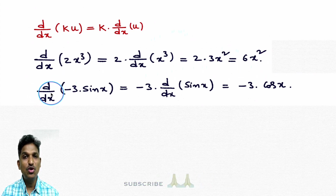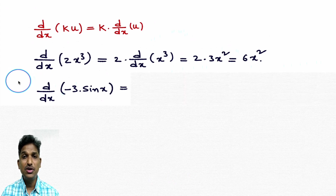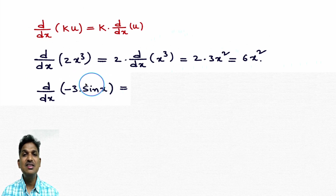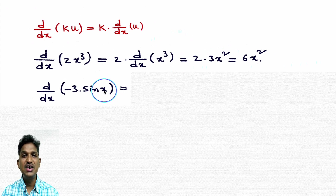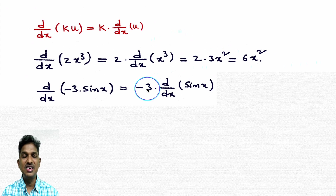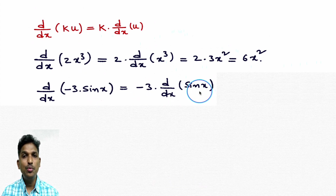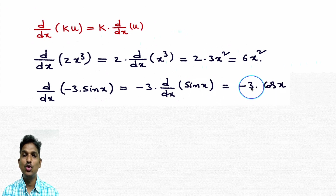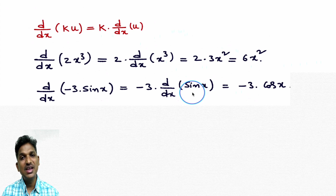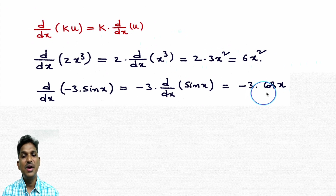One more problem on this formula — it's very frequently used in differentiation. d/dx of minus 3 into sin x. This is like d/dx of ku — minus 3 is the constant and sin x is the function. How to differentiate: write constant minus 3 into d/dx of sin x. Derivative of sin x is cos x. So derivative of minus 3 sin x is minus 3 cos x.